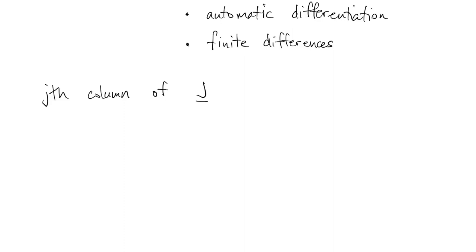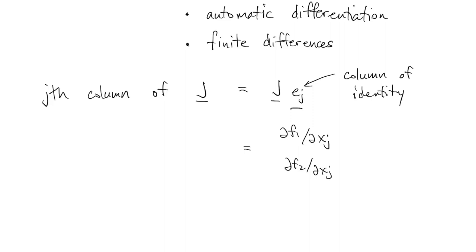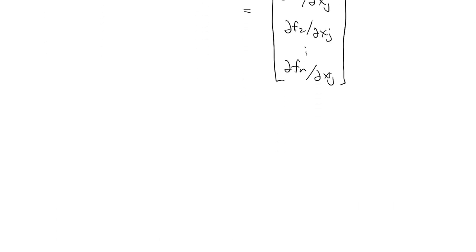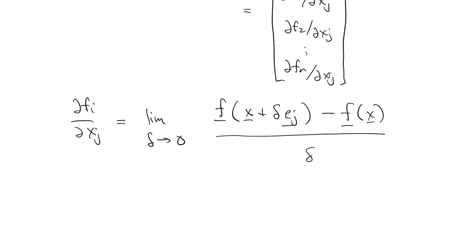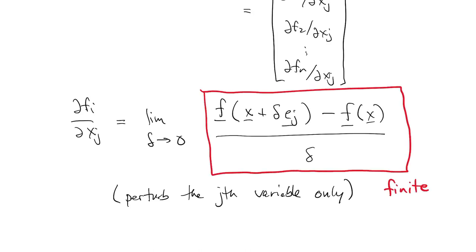If we look at the jth column of the Jacobian, which is the Jacobian times ej — our usual notation for a column of the identity matrix — that jth column is just all the different partial derivatives with respect to xj. Going back to the definition of a partial derivative, we look at x and change just the jth variable, subtract off the original f of x, divide by delta, and take the limit as delta goes to zero. So we perturb only in the jth variable to find that particular derivative. If we ignore the limit part and choose a small value for delta, this is called a finite difference, and it should approximate the true partial derivative.